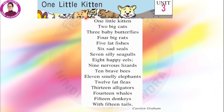One little kitten, two big cats, three baby butterflies, four big rats, five fat fishes, six sad seals, seven silly seagulls, eight happy eels, nine nervous lizards, ten brave bees, eleven smelly elephants, twelve fat fleas, thirteen alligators, fourteen whales, fifteen donkeys with fifteen tails — by Caroline Graham.